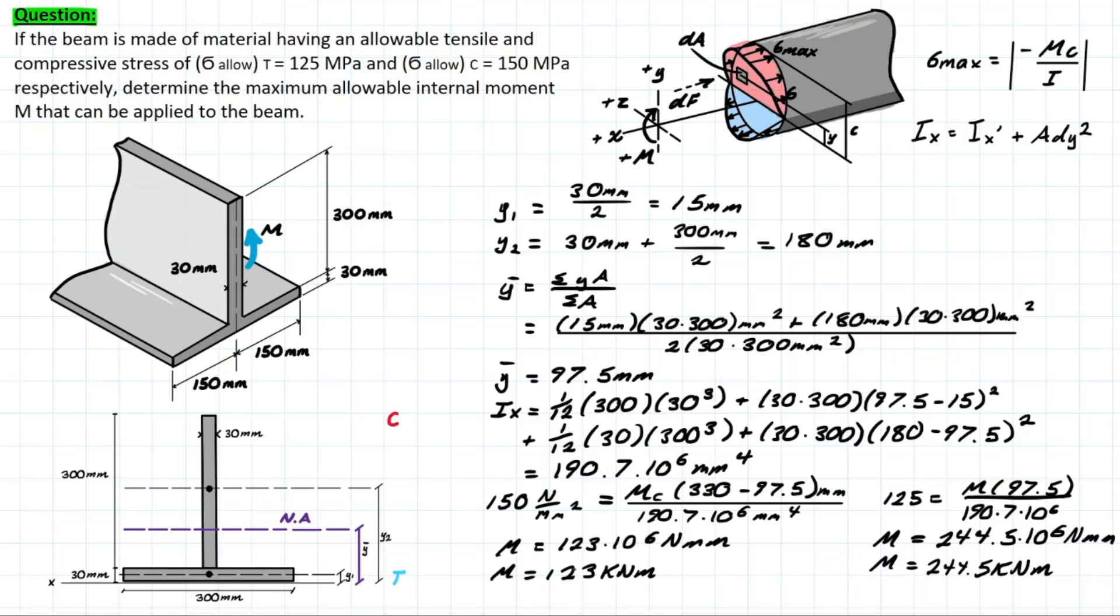Since this value is lower, this is going to be the max moment that can be applied to our section, since this side is going to fail first based on the allowable stress given for the compressive side. So that's it for the problem. Super simple, super easy. I hope the explanation helped. Thanks for watching.